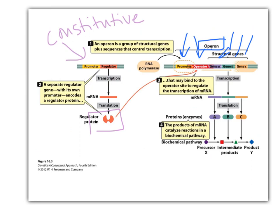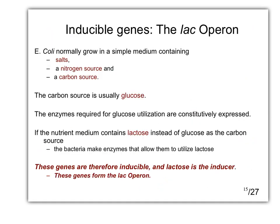If this regulator protein is a positive regulator, when it binds we get transcription. If it's a negative regulator, when it binds we don't get transcription. How an inducer or another molecule reacts with that protein tells you whether transcription is on or off. In the next lecture we'll talk about a negatively regulated operon — the lactose operon, or lac operon. That's all for this short, punchy chunk.